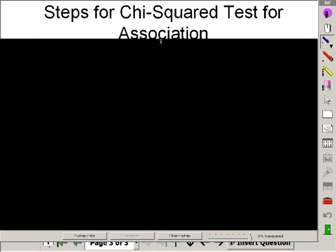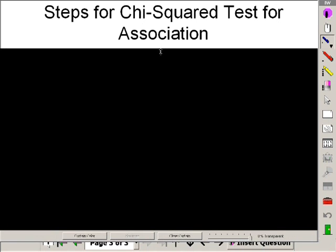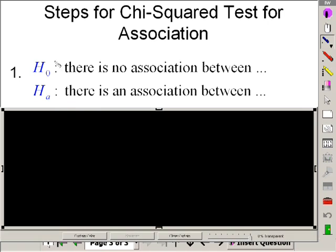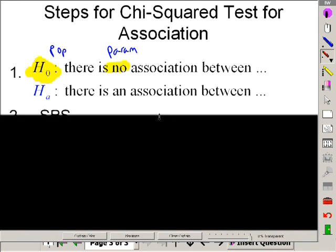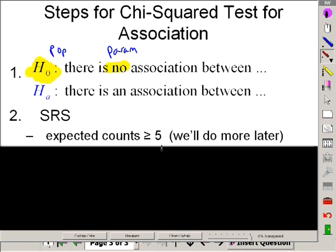And again, as far as the work here, the four-step inference toolbox steps for the chi-squared test for association. Step one, as always, we'll identify population. We'll identify parameter. Ho, no. Ho, no association. And Ha, there is an association.